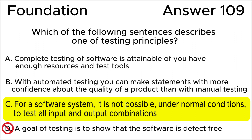Answer D is wrong because testing aims to reveal the presence of defects, not to prove the absence of defects. This aligns with the principle that testing shows the presence, not the absence, of defects. My recommendation: please figure out all testing principles with examples to understand the meaning of each principle.